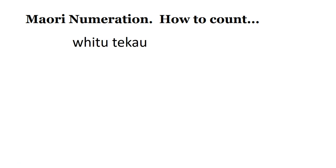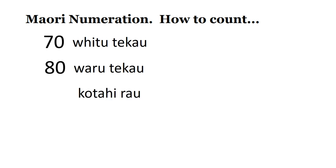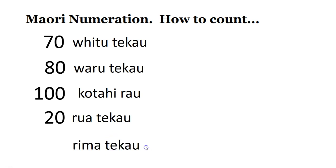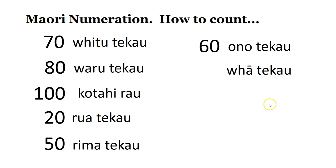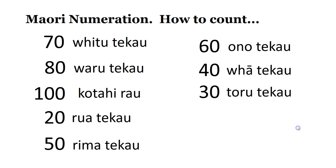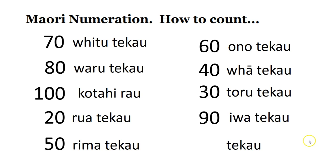Now I'll give you the word in Māori, and you try and give the number in English before I say it. Fitu te kau — seventy. Waru te kau — eighty. Kotahi rau — one hundred. Rua te kau — twenty. Rima te kau — fifty. Ono te kau — sixty. Whā te kau — forty. Toru te kau — thirty. Iwa te kau — ninety. Te kau — ten.